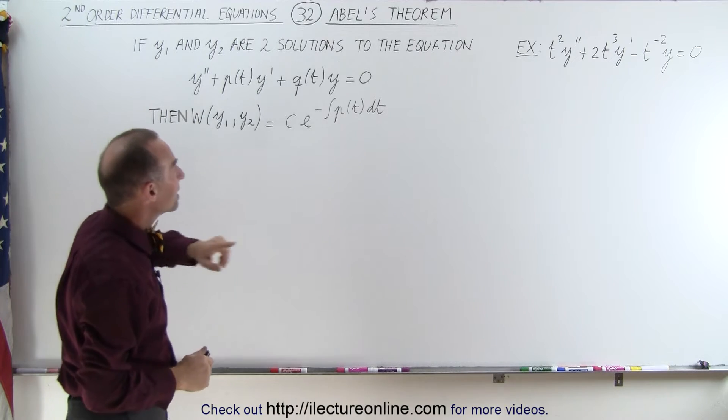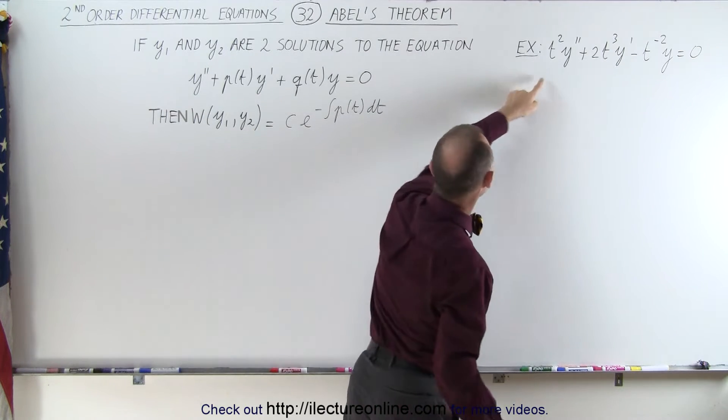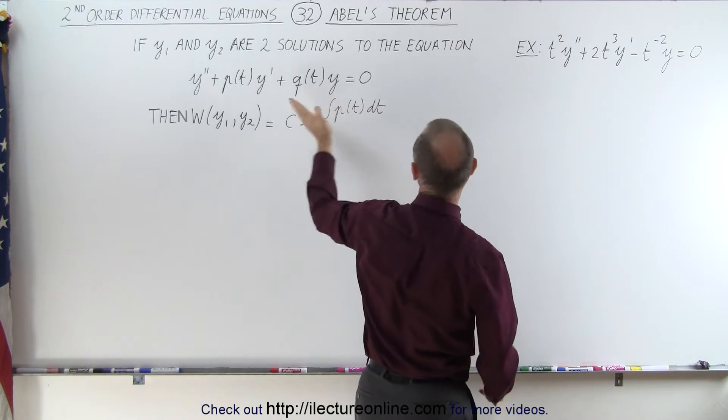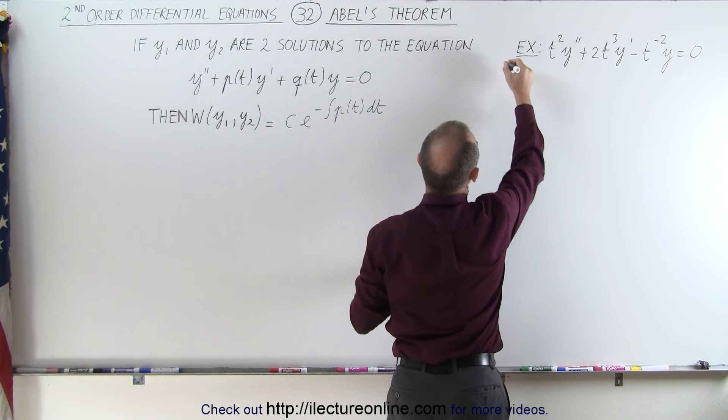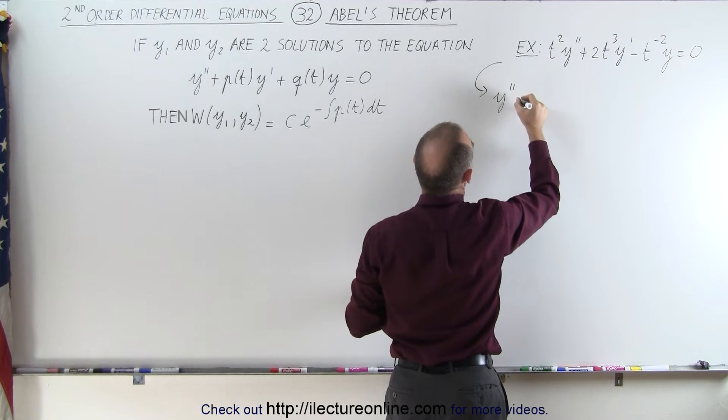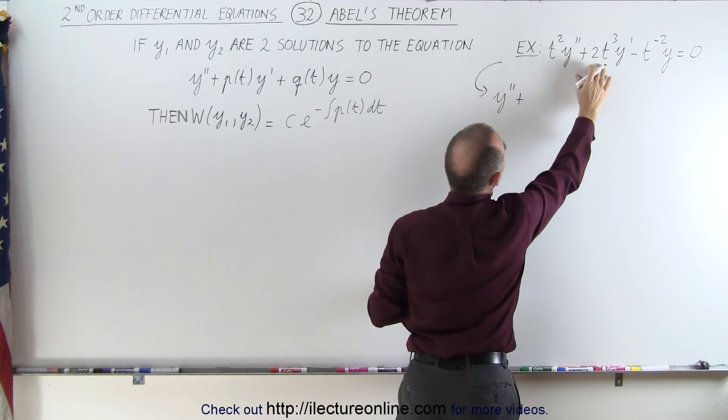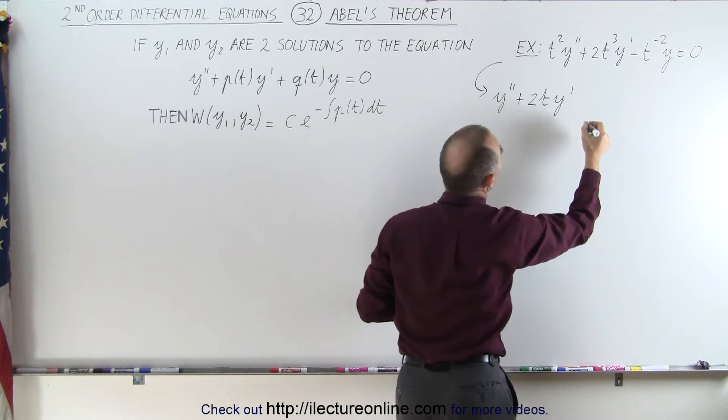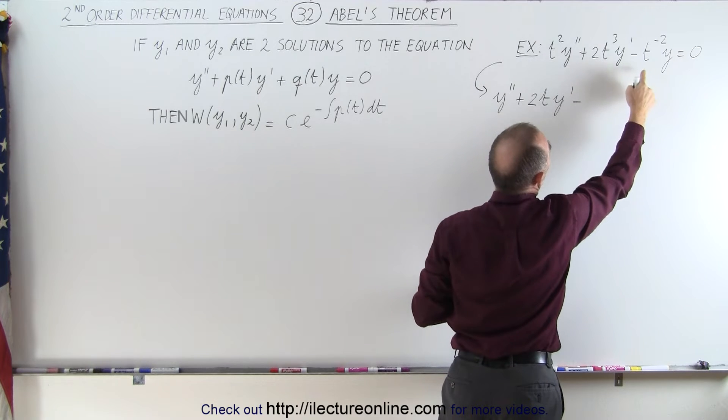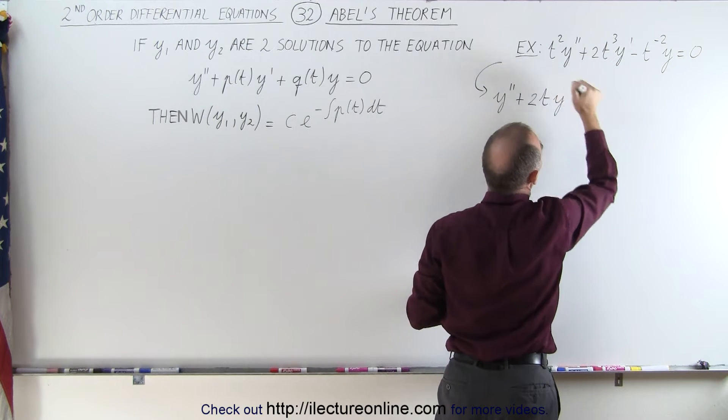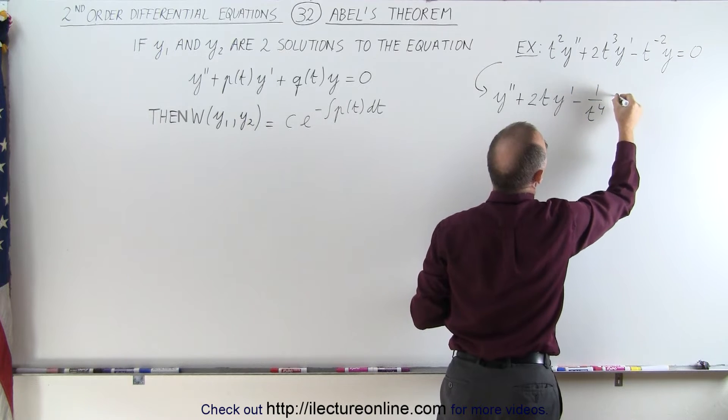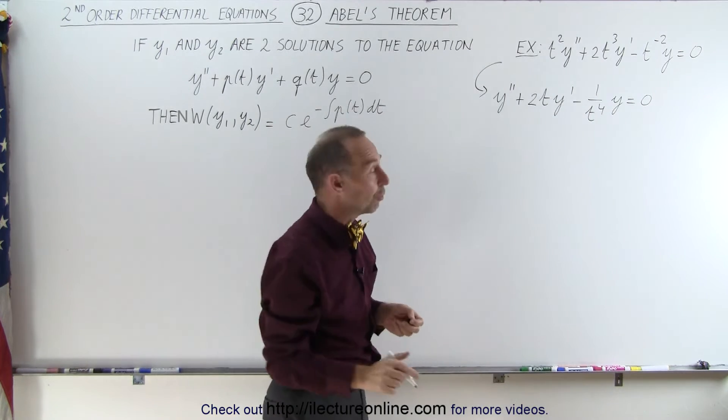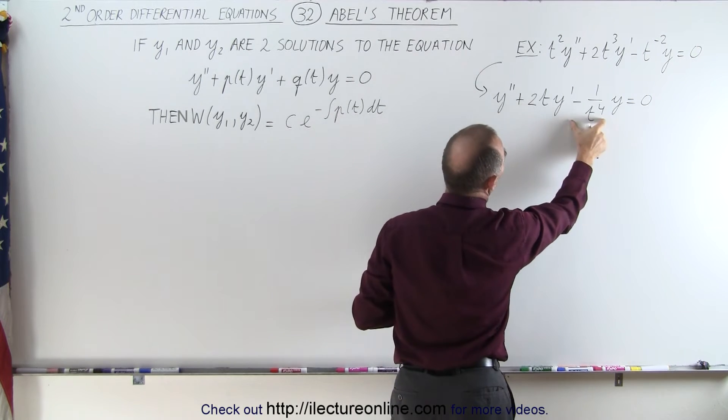First of all, you can see that the example is not in the correct format. So we have to divide everything there by t-squared to get it into the correct format. This can then be written as y double prime plus t cubed divided by t squared is 2 times t times y prime minus, and that's already 1 over t squared, divided by t squared becomes 1 over t to the fourth times y equals 0. So now we have this in the correct format where this here is p of t and this here is q of t.